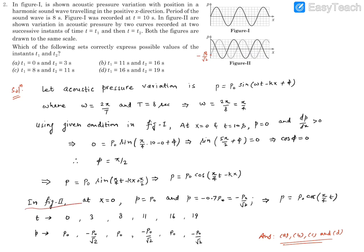About figure 2: at x equal to 0, p equals p naught and p equals minus p naught by root 2, as I just explained. When we talk about x equal to 0, we can substitute and write the pressure at all times. So pressure at all times at x equal to 0 is given by p equals p naught cos pi t by 4.